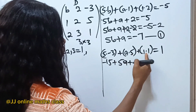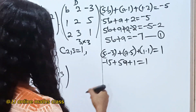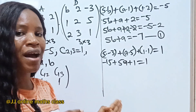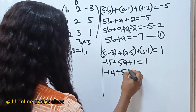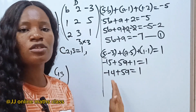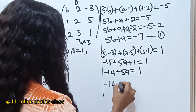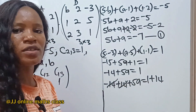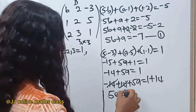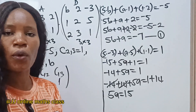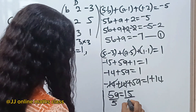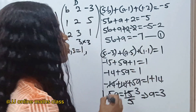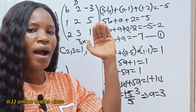Simplifying: -15 + 1 = -14, so we have -14 + 5a = 1. Adding 14 to both sides gives 5a = 15. Dividing both sides by 5, we get a = 3. We have found the value of a.